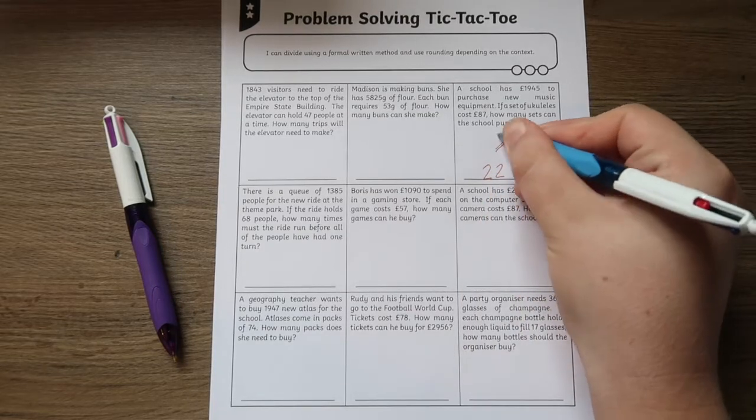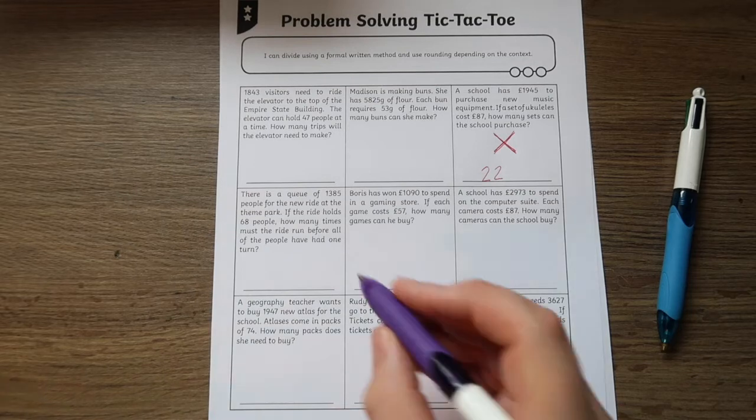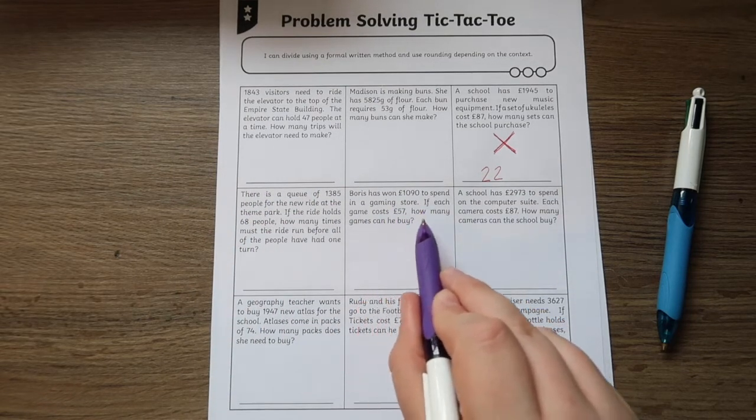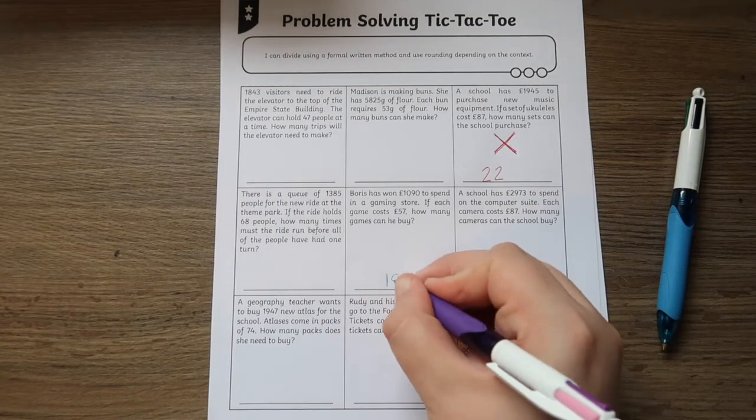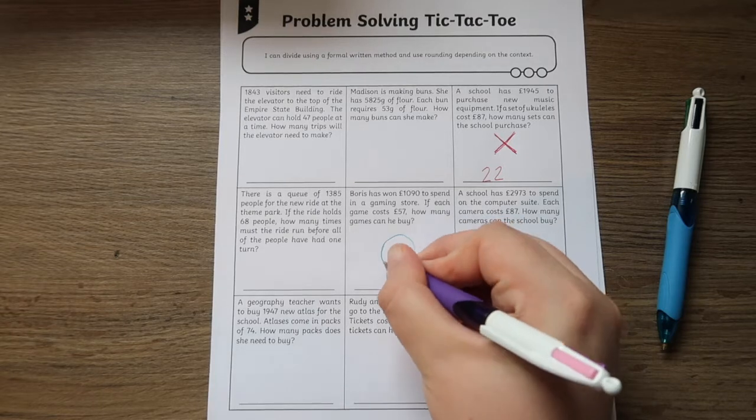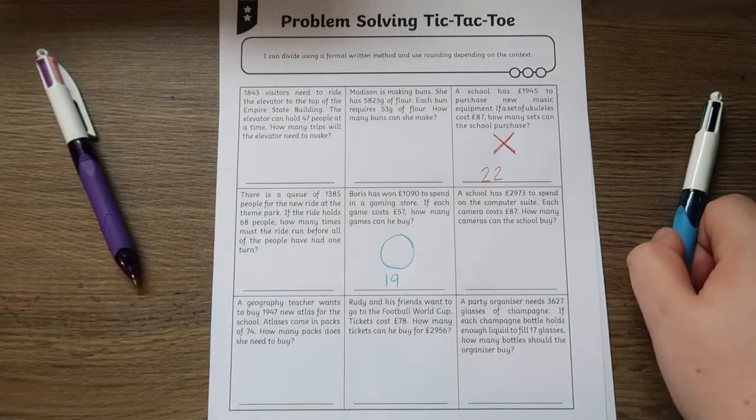The resource is differentiated with one star being the easiest and three star being the most challenging. This means that the resource is accessible and suitable for all children in Key Stage 2, no matter what their ability.